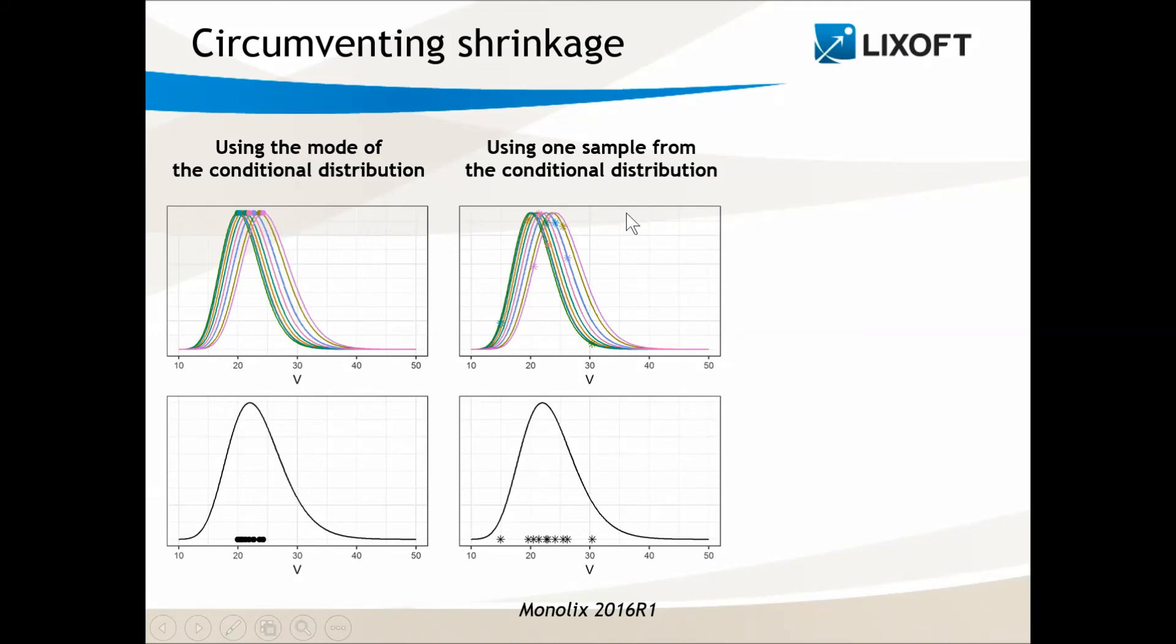If for each individual we draw one sample randomly from the conditional distribution and pull all values together, we see that these values are nicely spread over the entire population distribution. And this is what we want.